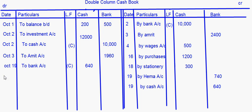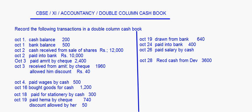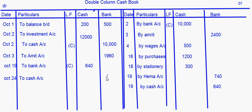October 24th: paid into bank again, so bank balance increases. Write 'to cash account' in the bank column as 400. This is again a contra entry, so on the credit side write 'by bank account' in the cash column as 400 — cash is decreasing, so it is credited.